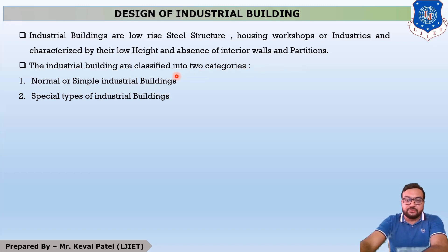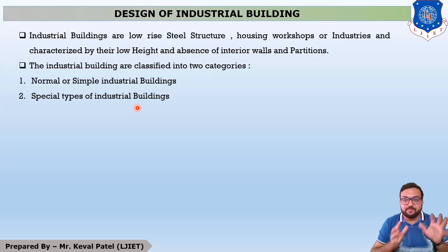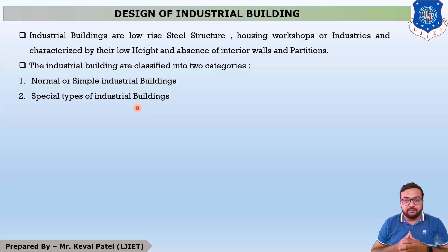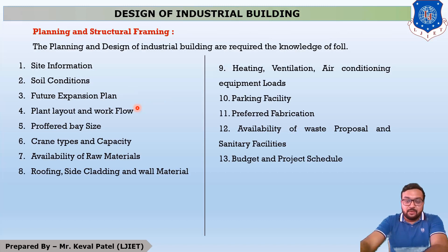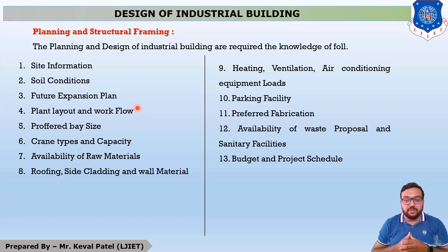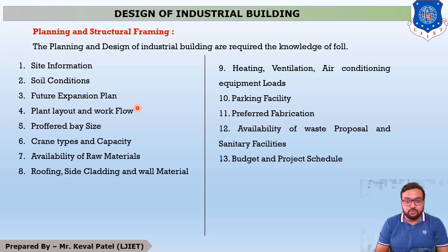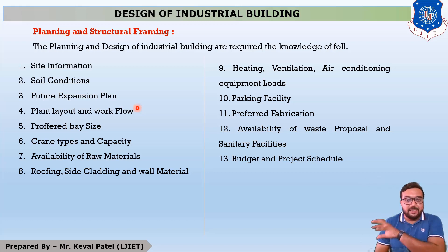The next question is: how many types of Industrial Buildings are there? Generally, industrial buildings are classified into two categories. First is Normal or Simple Industrial Buildings, and second is Special Types of Industrial Buildings, where a special purpose is served. Now, if we are planning or designing any industrial building, we must have knowledge of the following things. This question is asked in exams: what features are kept in mind when designing or planning any industrial building?